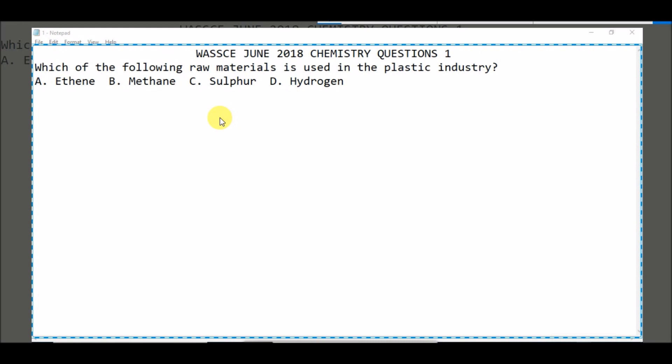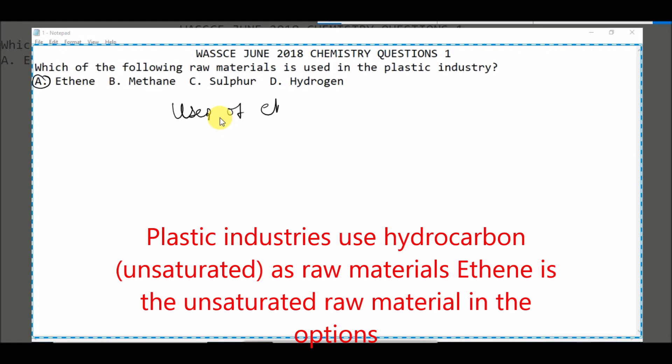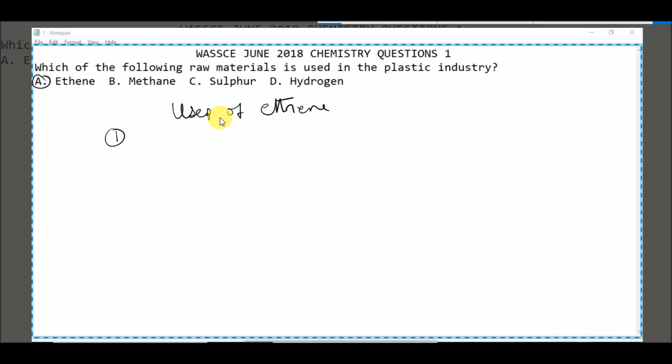The answer is ethene. Why? Because when you check your textbook for the uses of ethene, you will find out that one of the uses is as a raw material for plastic industry or industries. So you can actually use ethene as a raw material for plastic industry because it is an unsaturated hydrocarbon.